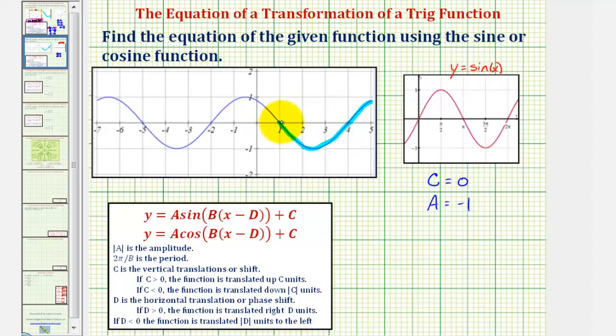Now notice that we're starting at x equals positive 1, which means we have a horizontal shift right one unit, which means d is positive 1. But notice our equation here is in the form of x minus d, so we'll have x minus 1, because we have a horizontal shift of one unit.